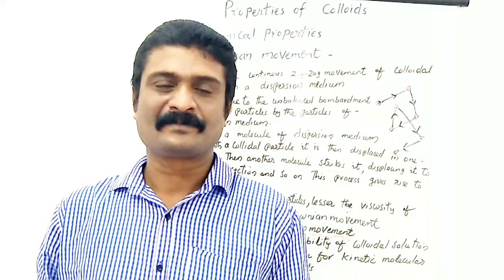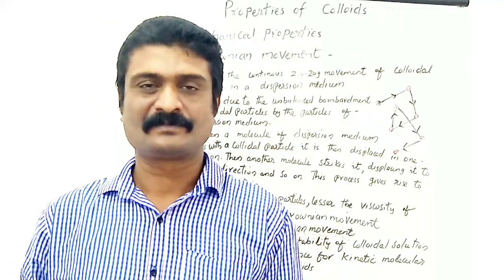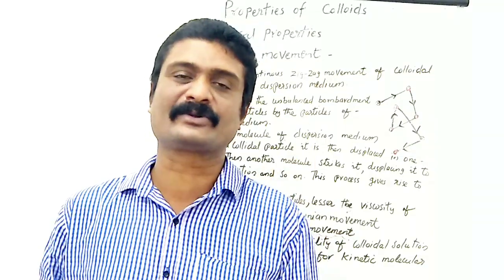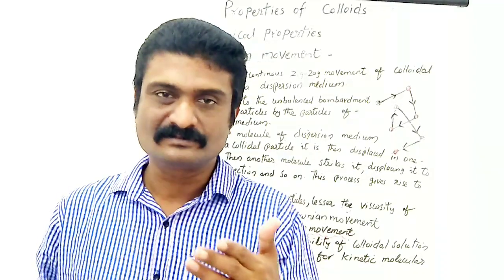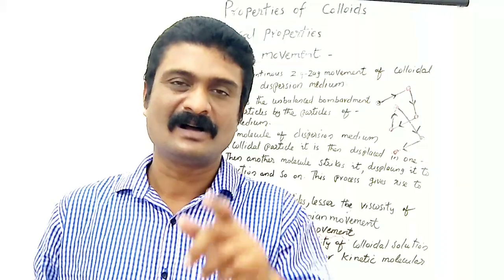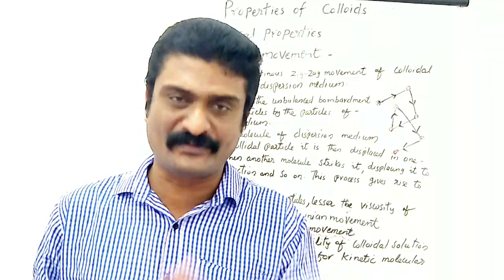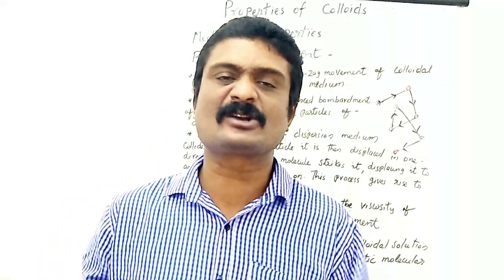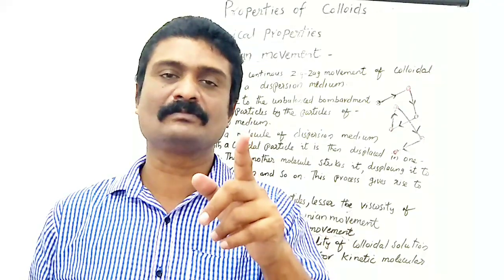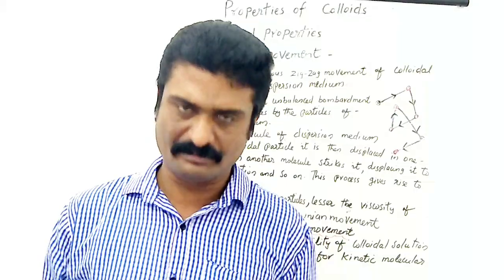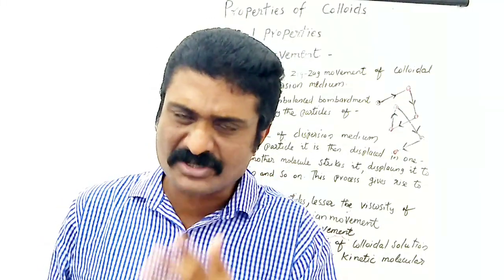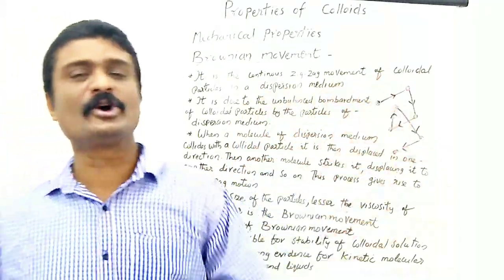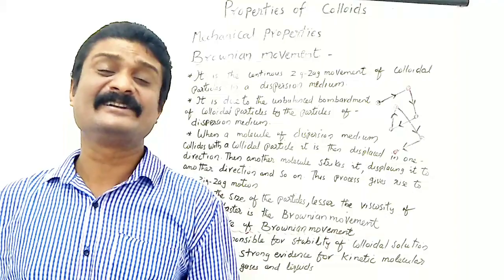When a colloidal solution is observed through a high-powered ultramicroscope, the colloidal particles are seen to be in a state of random motion. This motion was first observed by a British botanist, Mr. Robert Brown. Brownian movement is the continuous zigzag movement of colloidal particles in a dispersion medium.